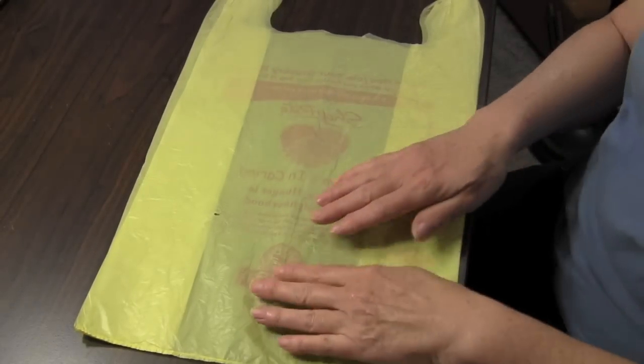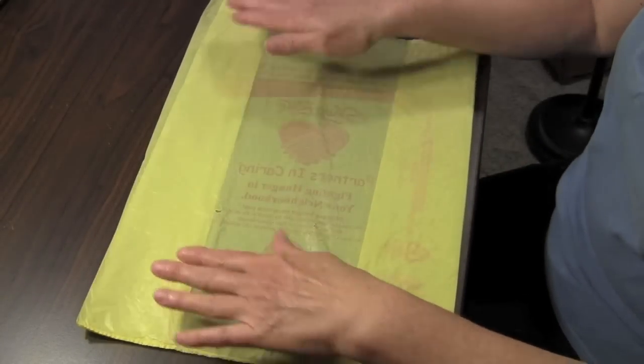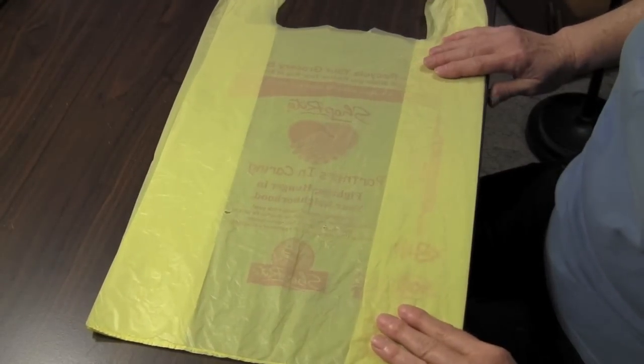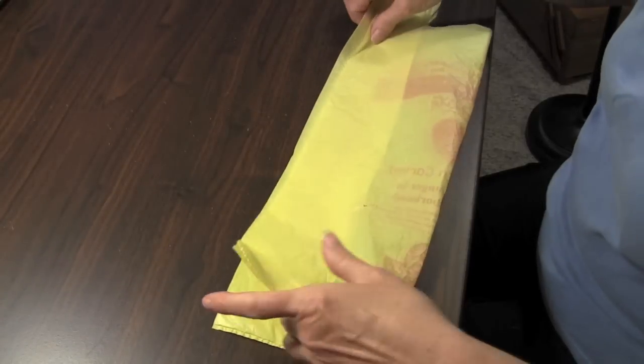Lay the plastic bag out flat, flattening the seam and smoothing out wrinkles. Fold the bag in half lengthwise, and then in half again.